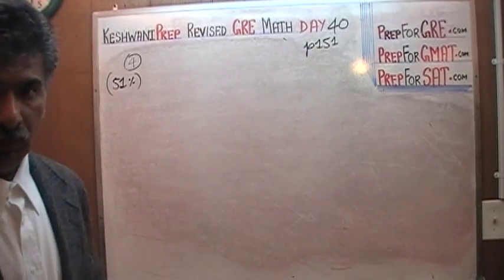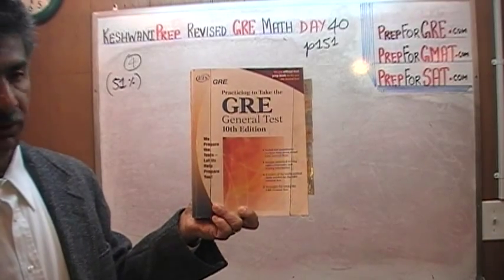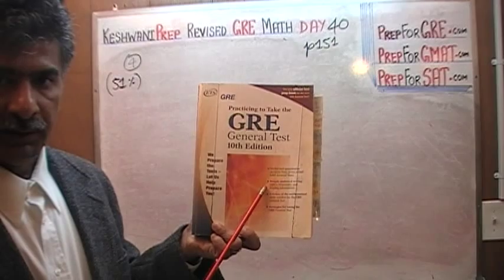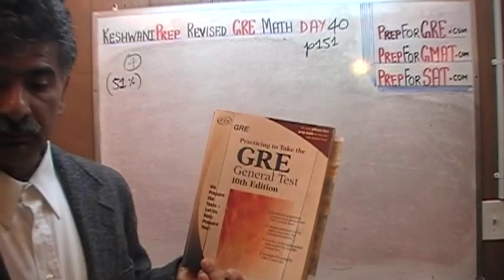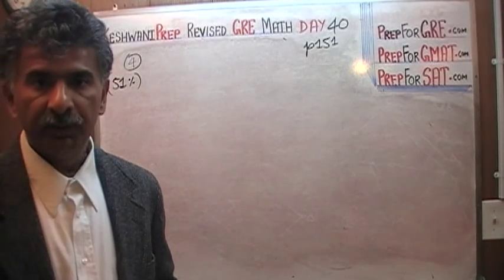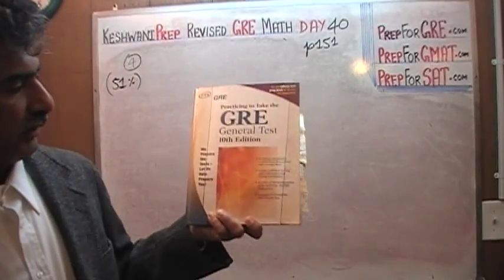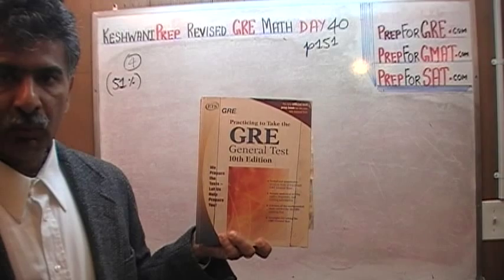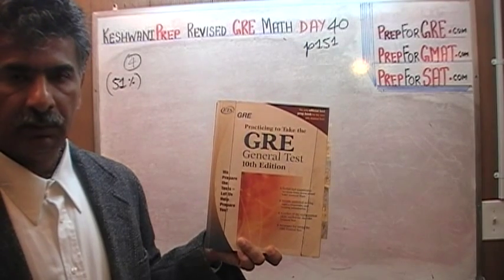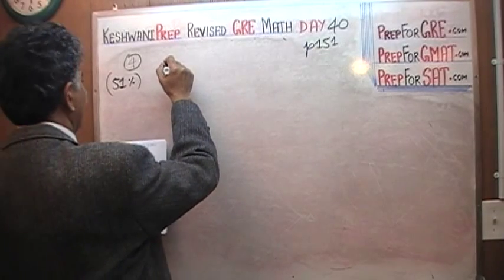If you are interested in watching my old videos on the exact same problem — it appears in the old book, the old version of the GRE, 'Practicing to Take the GRE General Test,' 10th edition — the quantitative comparison questions have not changed from the old GRE to the revised GRE. That old book has seven exams, each with 30 quantitative comparison questions, totaling 210 questions, and I have done every single one. The videos are posted on YouTube — just search GRE.